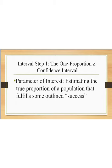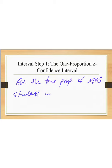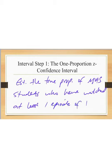The first step — the optional step — is to define the parameter of interest. This is where we give our thesis statement, as if this were being published in a newspaper or journal. We are going to estimate the true proportion of MHS students who have watched at least one episode of The Bachelor or Bachelorette. That's our thesis statement — it's what the work to follow is going to be accomplishing.